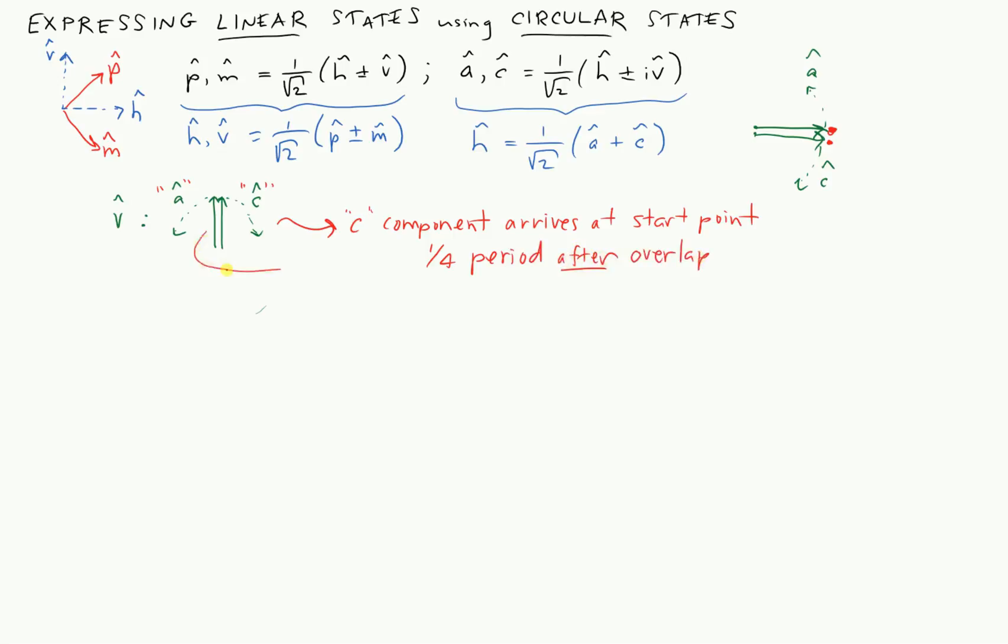And by the same token, we see that the a component is at the start point, think about the way this anti-clockwise thing is rotating. It was pointing to the right a quarter cycle ago, and now it's overlapping here. So the a component arrives at the start point a quarter period before the overlap.